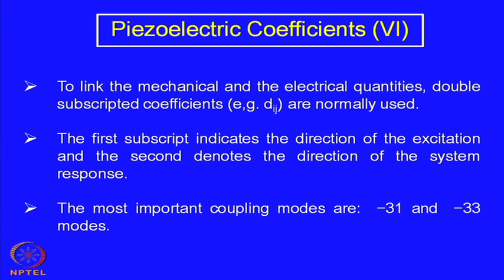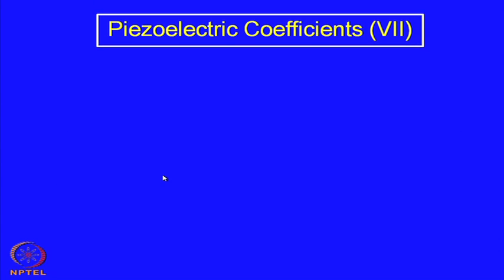The most important coupling modes are 3-1 and 3-3: that is, i=3, j=1, or i=3, j=3. The 3-3 mode is the normal mode, whereas 3-1 is a shear mode. These are how we denote the piezoelectric coefficients.